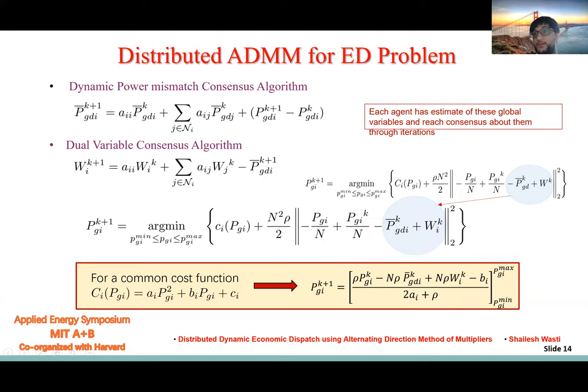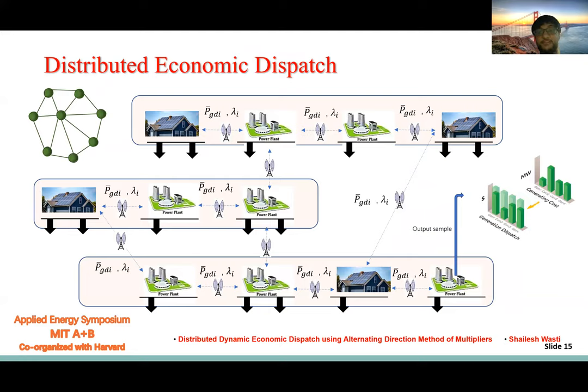Here is distributed economic dispatch. This is the architecture that's implemented. Here are different plants. This is solar, other plants, and now this plant has the information of this solar and this plant, and this plant for this solar just has the information of this one. Each agent now solves the optimization problem on their own without the need of a master node or a central entity.